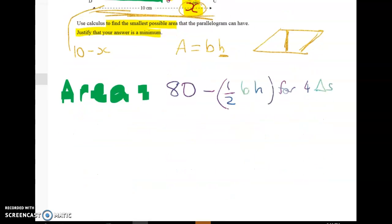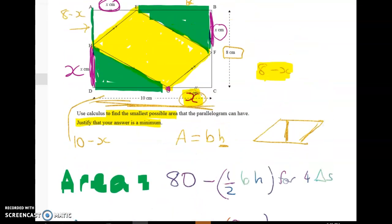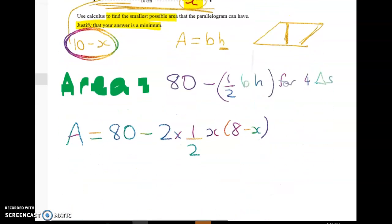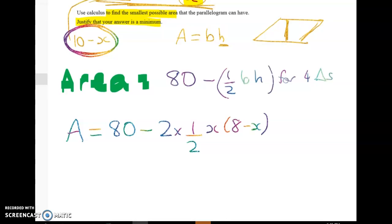We've got area, pen's not working right, area is equal to 80 minus two of those triangles which have area of a half times x times 8 minus x. Now what about the next two triangles? Well this one here is what have we got? Well we've got 10 minus x and x so it's going to be half that base times that height and we've got two of those triangles so it's going to be minus two lots of half the base times the height.